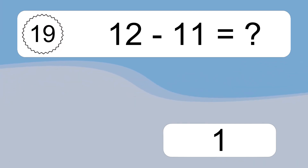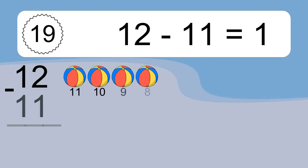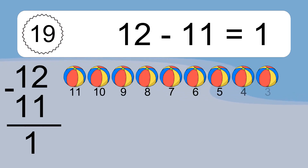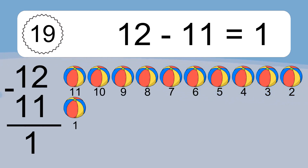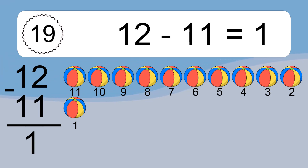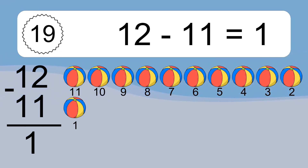12 minus 11 equals what? 12 minus 11 equals 1. Let's count it! 11, 10, 9, 8, 7, 6, 5, 4, 3, 2, 1.